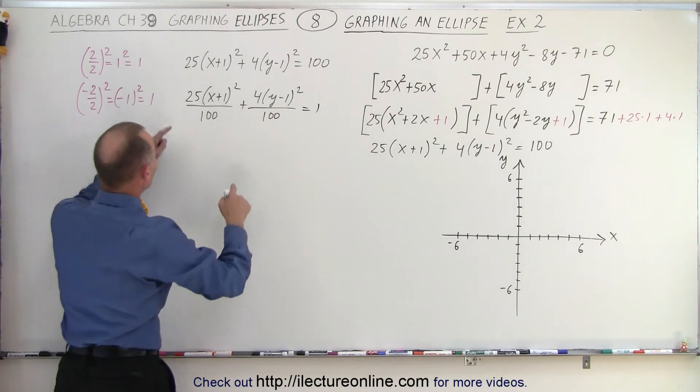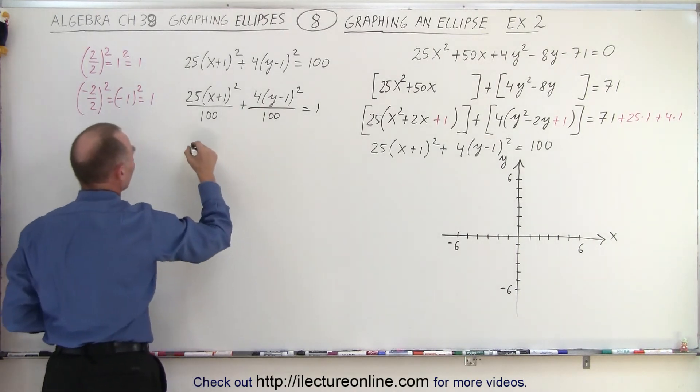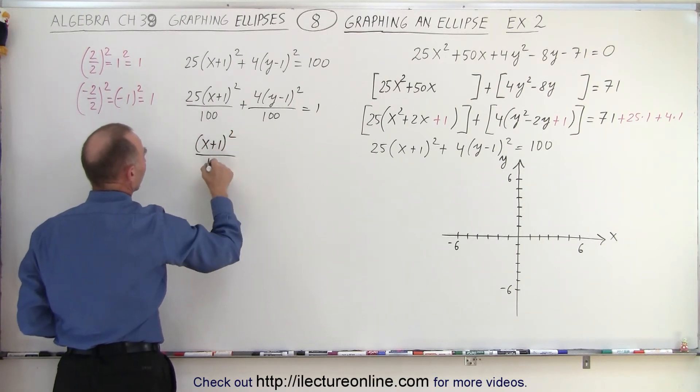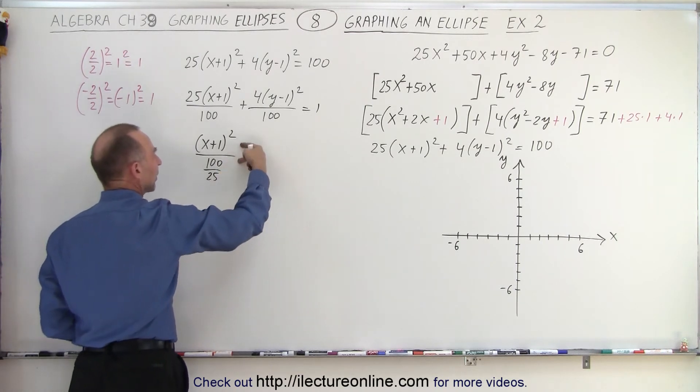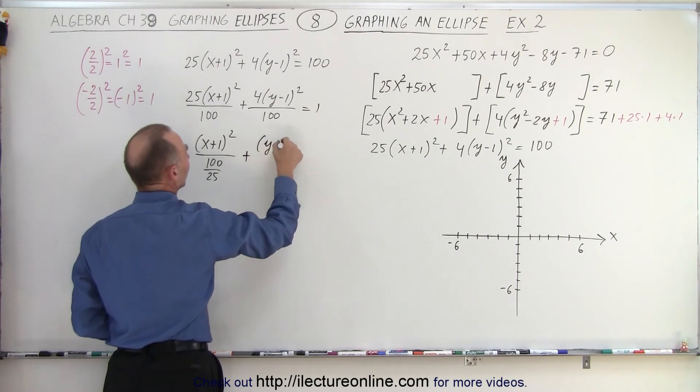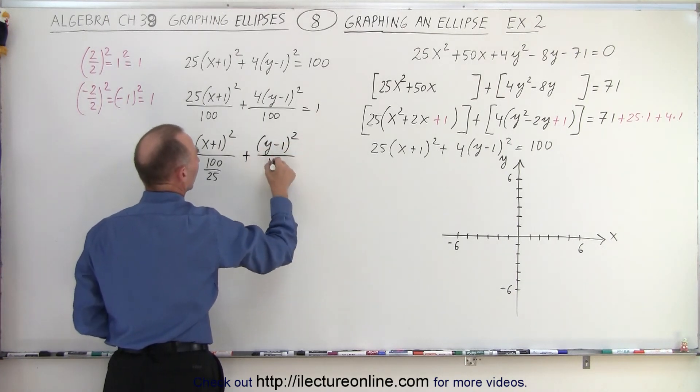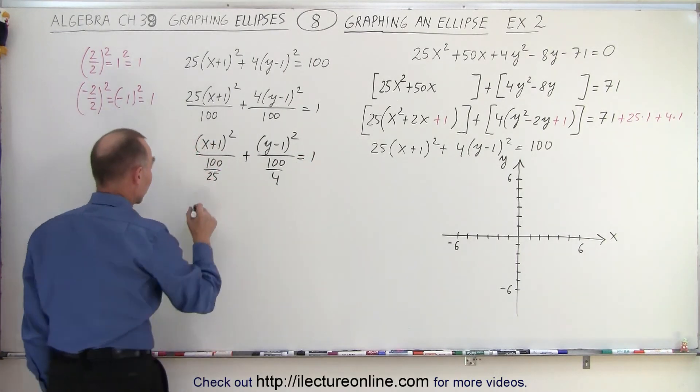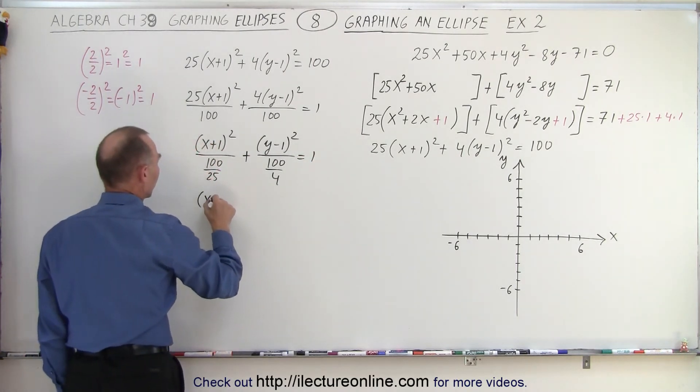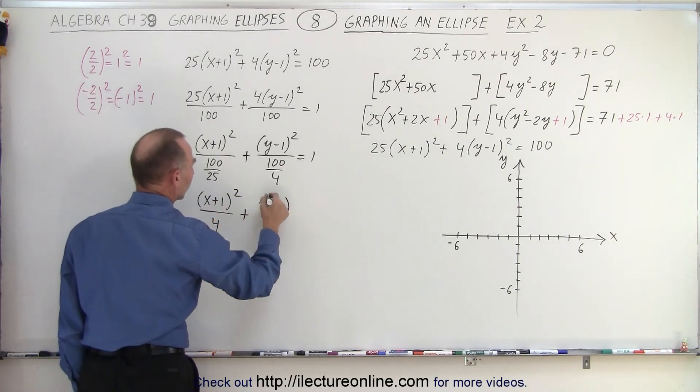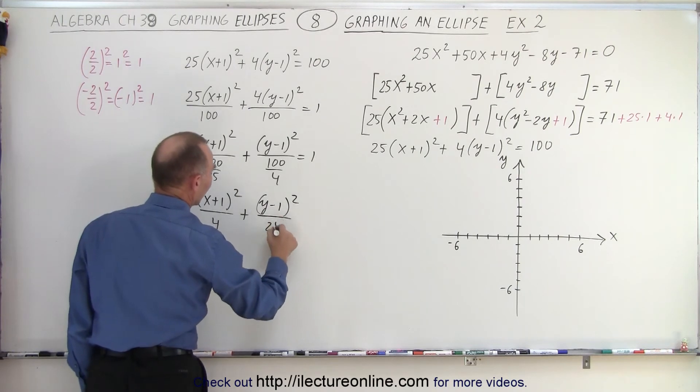We take the 25 and the 4 and write them underneath the 100. So this becomes (x + 1)² divided by 100/25. When you divide by fractions, it's the same as multiplying by its inverse. Plus (y - 1)² over 100/4 equals 1. When we simplify, this becomes (x + 1)²/4 + (y - 1)²/25 = 1.